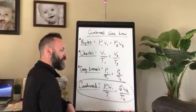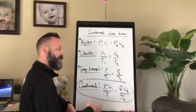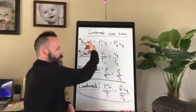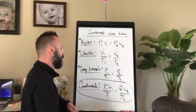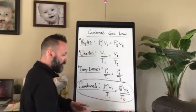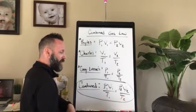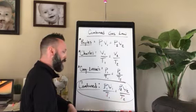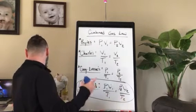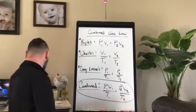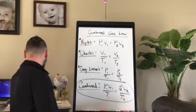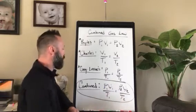Moving forward, we're going to use the combined gas law P1V1/T1 = P2V2/T2. If something is held constant, get rid of that variable and you'll be left with one of the three gas laws. If nothing is held constant, stick with the combined gas law. Let's turn to page 340 in your textbooks and do sample problem 12-4.